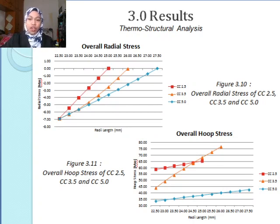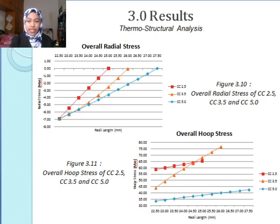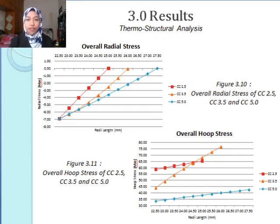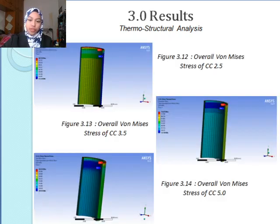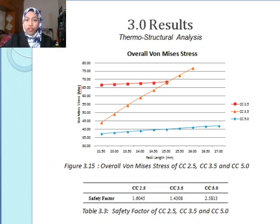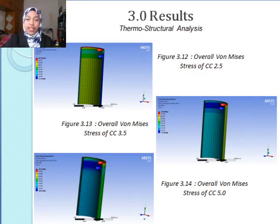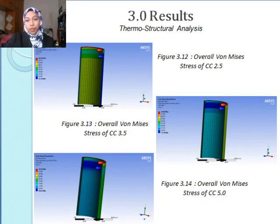For thermostructural analysis, the overall radial stress shows a maximum on the inner wall of the cylinder approaching zero on the outer wall. For overall hoop stress, it is different from the initial hoop stress due to the effects of pressure along with temperature difference. CC3.5 shows a very large difference in hoop stress when there is a large temperature difference, meaning a large temperature difference contributes to a larger stress distribution. This is evident in hoop stress and also in Figure 3.15 for overall von Mises stress. Figures 3.12 to 3.14 show the visual representations for CC2.5, CC3.5, and CC5.0.